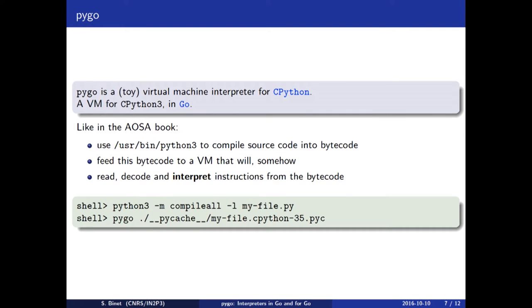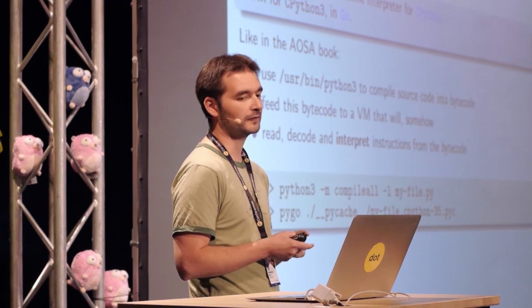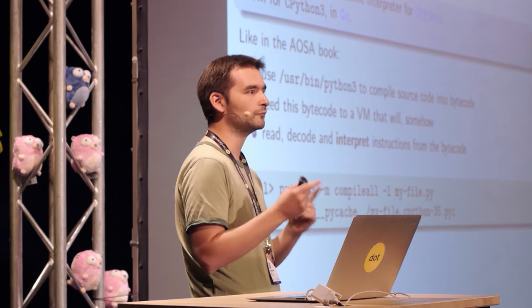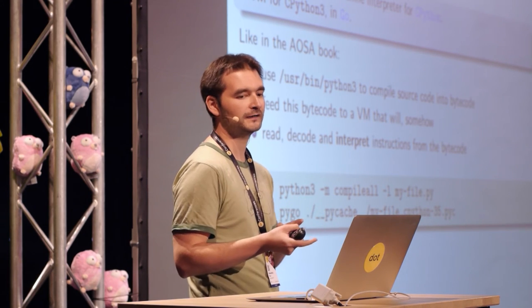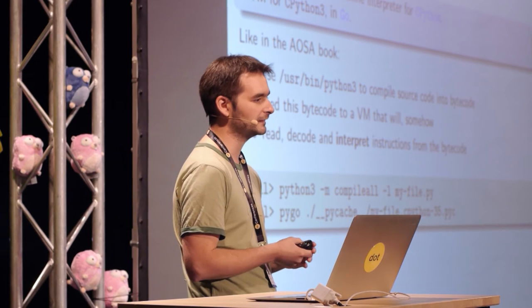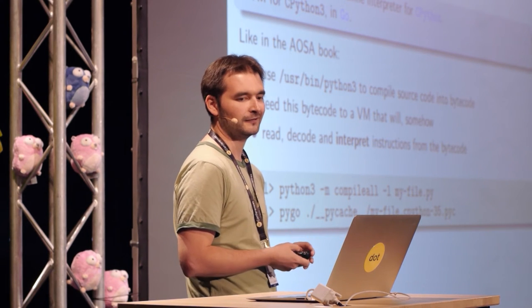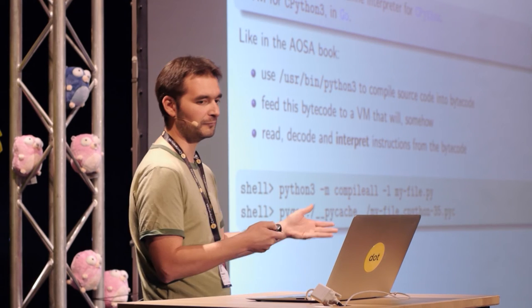That's how PyGo was born. It's still a toy virtual machine interpreter for CPython written in Go. Like in the AOSA book, it relies on the Python 3 interpreter to compile the Python source into bytecode, then launches a VM which is fed that bytecode, and reads and interprets those instructions.